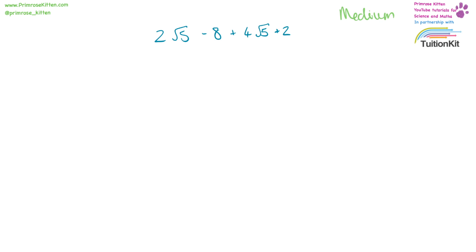Slightly more complicated now. We have 2 square root 5, 4 square root 5, minus 8 plus 2. 2 square root 5 plus 4 square root 5 gives us 6 square root 5, and minus 8 plus 2 gives us minus 6. So the answer is 6 square root 5 minus 6.